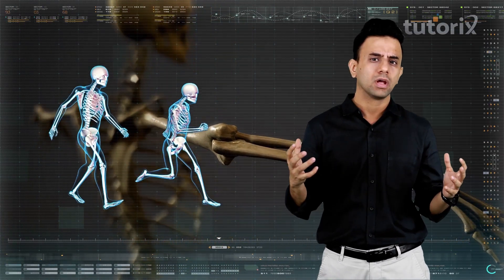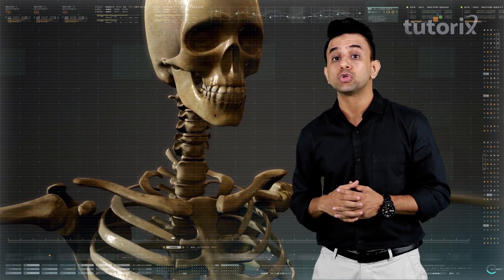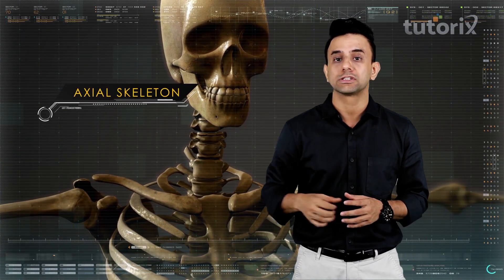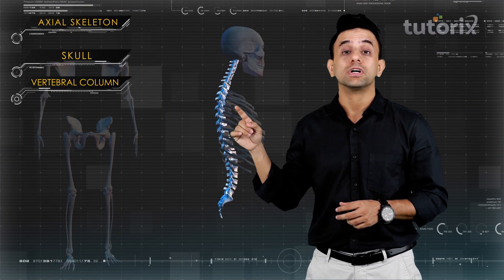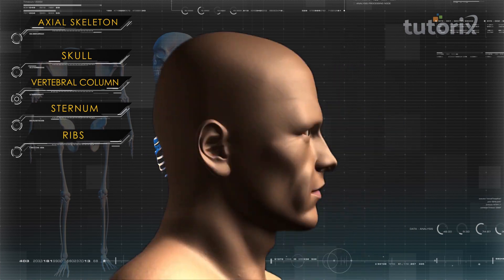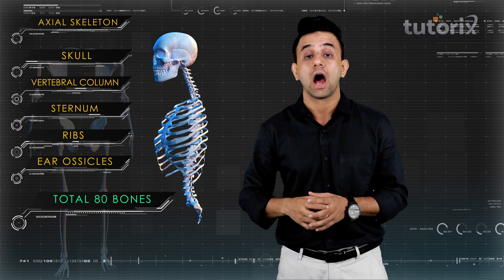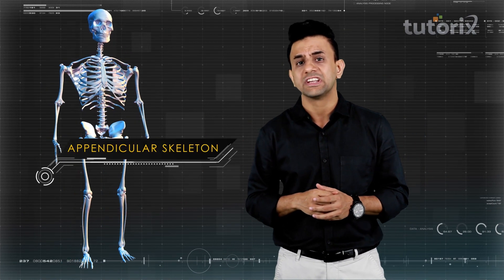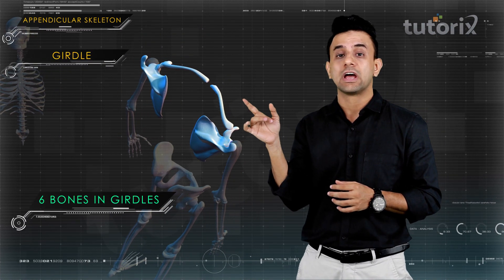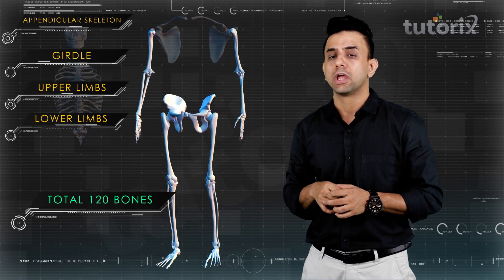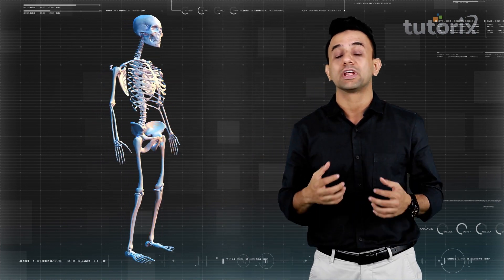The human skeleton, like other vertebrates, is divided into two principal sections: the axial skeleton and the appendicular skeleton. The axial skeleton consists of the bones of the skull, the vertebral column, the sternum, the ribs, and the ear ossicles — totaling 80 bones. The appendicular skeleton has 126 bones: about 6 bones in the girdles and 120 bones in both the upper and lower limbs.